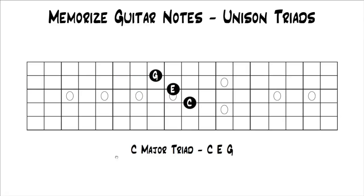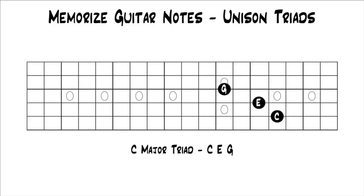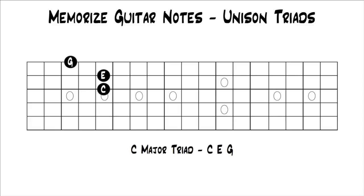It would look like this. Both those triads are unison to each other, so they're going to sound pretty much the same, except for the reasons I mentioned. Then you can do it again — you're going to run out of room really quick, but you can do it as high as you can reach on your fretboard. If you move all these notes to unison notes on the next strings, it would look like this. All three of these triads are unisons to each other.